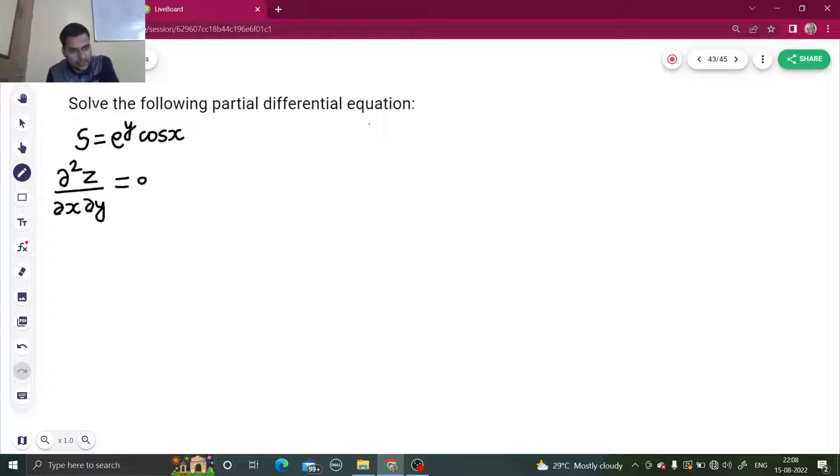This equals e^y cos x. So we have to remove this ∂/∂x and ∂/∂y, because this is nothing but written as ∂/∂x of ∂z/∂y. So first we will remove this ∂/∂x, then this ∂/∂y in order to get our z.